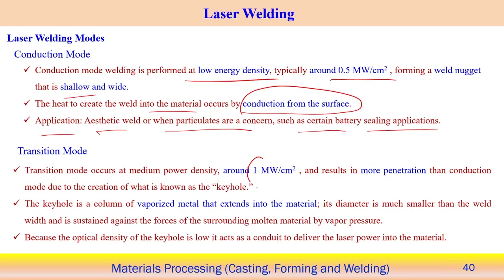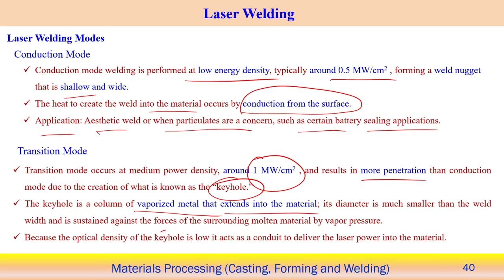Transition mode operates at medium power density around 1 MW/cm², with more penetration than conduction mode due to creation of a keyhole. The keyhole is formed by vaporized metal within the material, but in transition mode the keyhole size is small. The vaporized front is created, becomes stable, and moves ahead with the moving laser, with the cavity being filled by molten material.